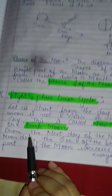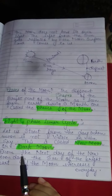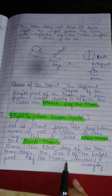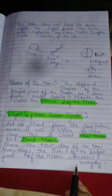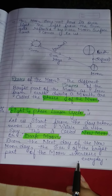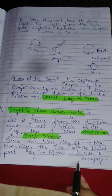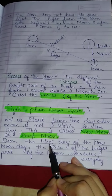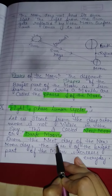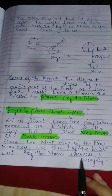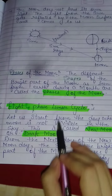From the next day after the new moon day, the size of the bright part of the Moon increases every day. Now we know that new moon occurs when the Moon is not visible in the sky. From the next day after new moon or dark moon, the size of the Moon's bright part increases every day. I will explain all of this in a diagram.